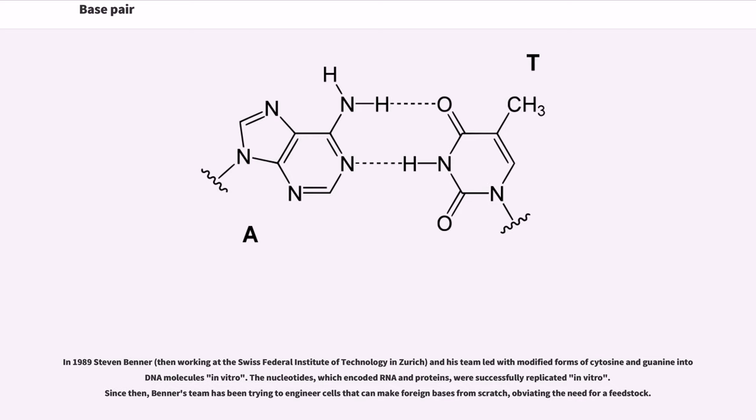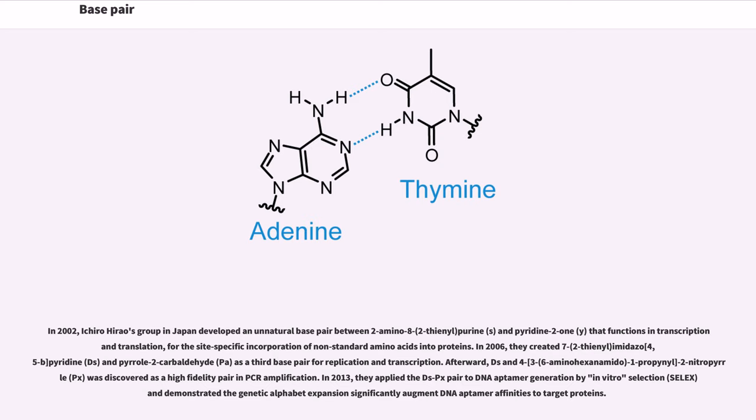In 2002, Ichiro Hirao's group in Japan developed an unnatural base pair between 2-amino-8-(2-thienyl)purine (s) and pyridine-2-one (y) that functions in transcription and translation for the site-specific incorporation of non-standard amino acids into proteins. In 2006, they created 7-(2-thienyl)imidazo[4,5-b]pyridine (Ds) and pyrrole-2-carbaldehyde (Pa) as a third base pair for replication and transcription. Afterward, Ds and 4-[3-(6-aminohexanamido)-1-propynyl]-2-nitropyrrole (Px) was discovered as a high-fidelity pair in PCR amplification. In 2013, they applied the Ds-Px pair to DNA aptamer generation by in vitro selection (SELEX) and demonstrated the genetic alphabet expansion significantly augments DNA aptamer affinities to target proteins.